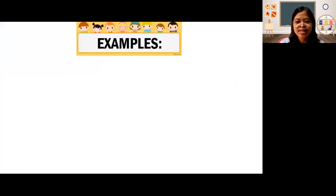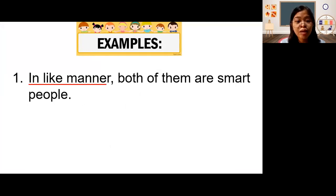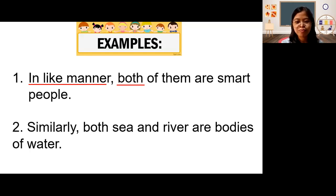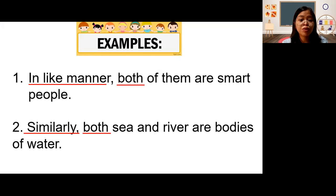First: 'In like manner, both of them are smart people.' Let us identify the word signals. We have 'in like manner' — that's correct, it shows comparison. We also have 'both.' Number two: 'Similarly, both sea and river are bodies of water.' We have the word 'similarly' from the word similar, and we also have 'both.' Very good. So when we say 'both,' it refers to the two of them.